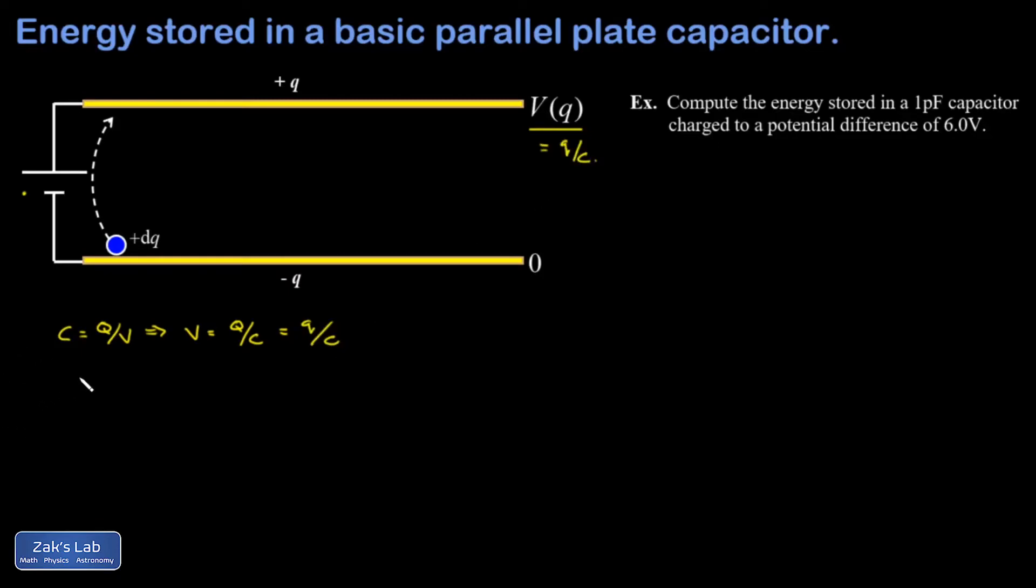Then, in order to get a handle on how much potential energy this little dq is getting on its way up from the negative to positive plates, I need to relate potential energy to potential difference. And I remember that potential is potential energy per unit charge. And this means the potential energy of a single charge is going to be q times v. And this, in turn, means that a change in potential energy for a charge is given by the size of the charge times the change in potential for that charge.